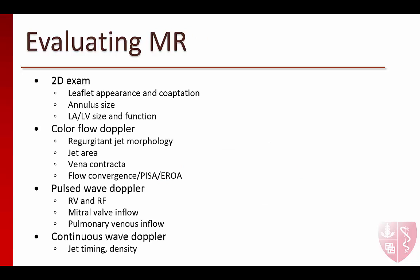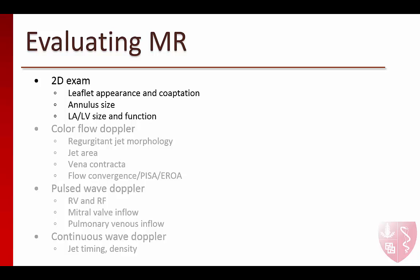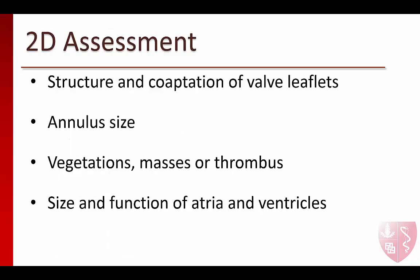This is the outline we will use to describe the echo evaluation of MR. First, let's look at how we use the 2D exam to evaluate MR. When evaluating the valve leaflets, pay close attention to the structure. Are they normal in appearance or is there redundant, missing, or damaged tissue? Are the leaflets thickened or retracted? Also evaluate the leaflet coaptation, or how well the leaflets come together and seal during systole. Is the coaptation occurring at the level of the annulus, above, or below? The size of the annulus should also be noted — a large, dilated annulus will almost always be associated with regurgitation. Look for vegetations, masses, or thrombus on the valvular apparatus that could prevent proper leaflet coaptation. Calcification will appear as a bright echogenicity either on the leaflets themselves or around the mitral annulus and will cause shadowing in the far field.